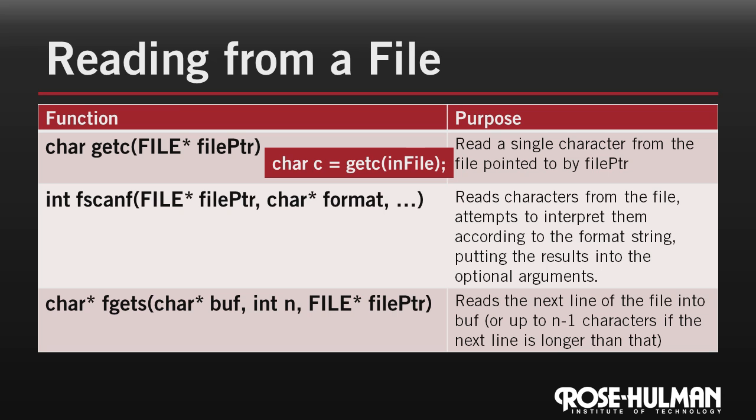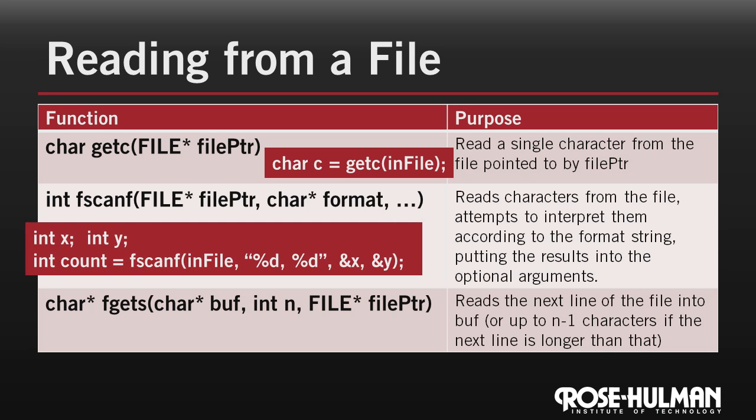fscanf is for formatted reading — it's a lot like scanf. Here's an example. This example declares two int variables, x and y. Then it asks fscanf to read from infile looking for two integers separated by a comma — that's what this format string says. We give fscanf the addresses of x and y so it can store the values where we can get to them. Finally, fscanf returns a count of the number of variables that were filled in. In this example, we could check that count was two afterwards and we'd know that the read succeeded.